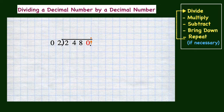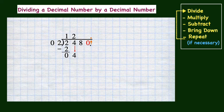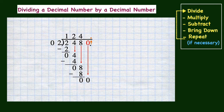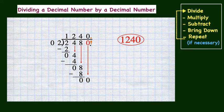Now we are ready to begin the division process. Two divides into two one time. After subtracting, we have a zero remainder. Now we can bring down the four and repeat the process again. Two divides into four two times, and four minus four is zero. We will bring down the next digit of eight and repeat the process again. Two divides into eight four times. And after subtracting, we have another zero remainder. We still have one more digit to bring down. You are not done dividing until every digit in the dividend has been brought down. And we know that two divides into zero zero times, and now we are done. Did you notice that I did not put a decimal point back into this whole number quotient? Since there are no decimal digits with this whole number, I can just skip placing the decimal point after the zero in the ones place.